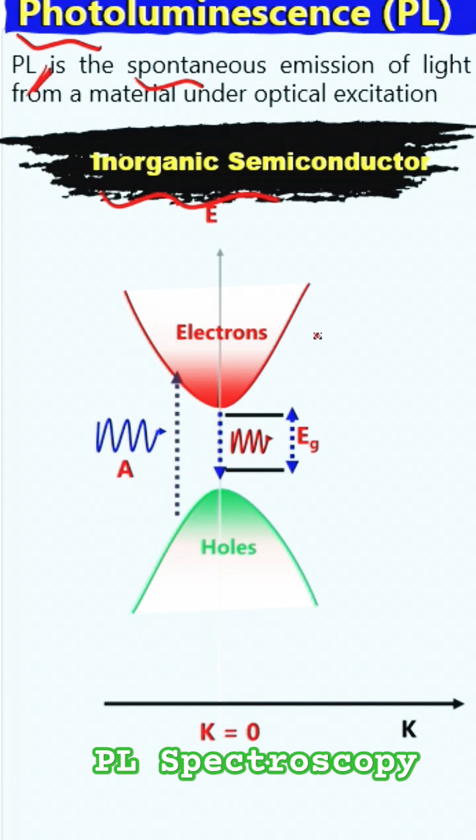We know that in inorganic material we have a conduction band here and we have a valence band here. And this region is basically we call conduction band minimum and this region is we call valence band maximum. The distance between these two is what we call band gap of the material.